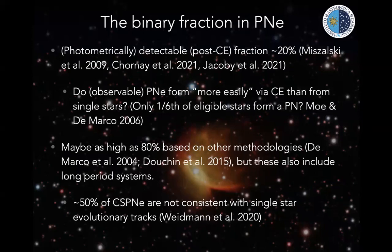Using techniques sensitive to longer-period systems, binary fractions as high as 80% have been found in planetary nebulae — attractive because that's roughly the same fraction that are aspherical, providing a clear binary route to influence morphology. However, that 80% figure has large uncertainties and must be taken with a pinch of salt. A recent paper by Walter Reidman comparing a compilation of central star properties to evolutionary tracks found that 50% are consistent with single-star evolution, but 50% are not — perhaps indicating that those 50% have experienced binary evolution.